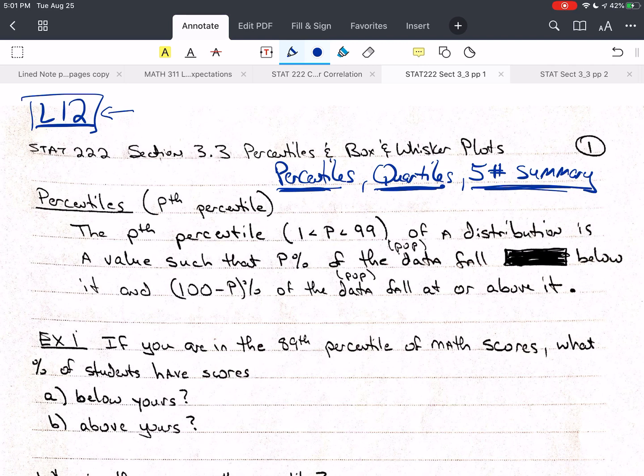Let's start with percentiles, the p-th percentile. The p-th percentile of a distribution is a value such that p-percent of the data fall below that value, and 100 minus p-percent of the data fall at or above that value.